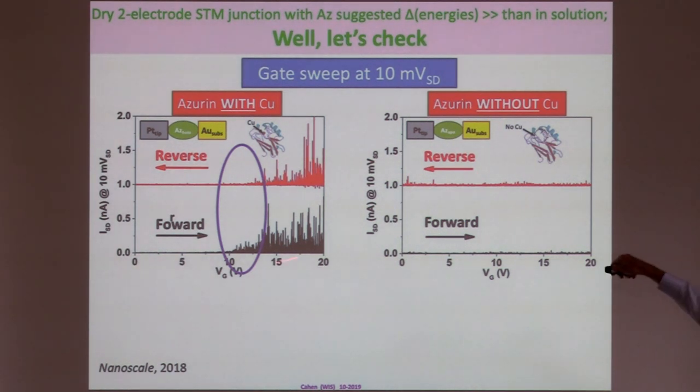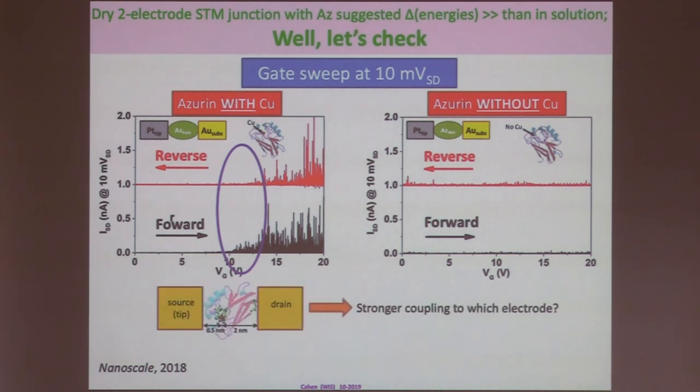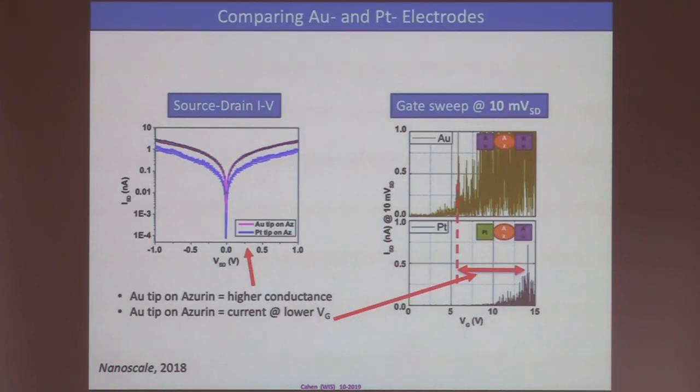So, this is a gate sweep where we have 10 millivolts between the source and the drain. And this is the gate voltage in reverse and forward with platinum tip and a gold substrate. And this is azurin with the copper. And then there is azurin, which we do without the copper. And we don't see anything. So, this convinces us that this very noisy signal at least is due to the transport via the protein involving the copper redox center, which in solid state doesn't undergo a redox reaction. The behavior of copper in azurin in the solid state is different. So, that's a fundamental difference between electron transfer in solution and a solid state measurement.